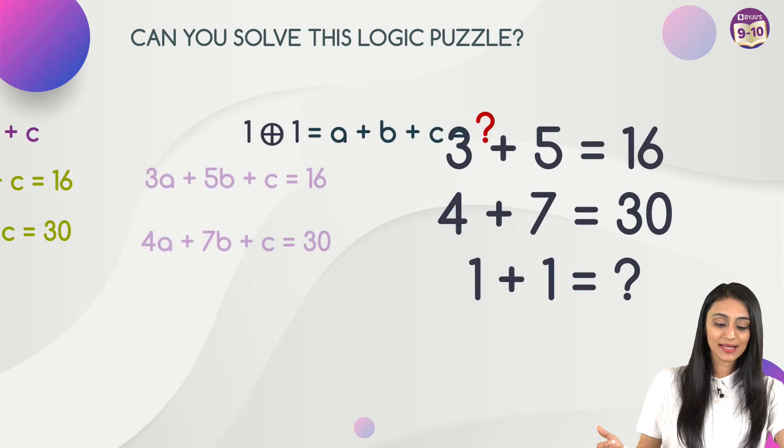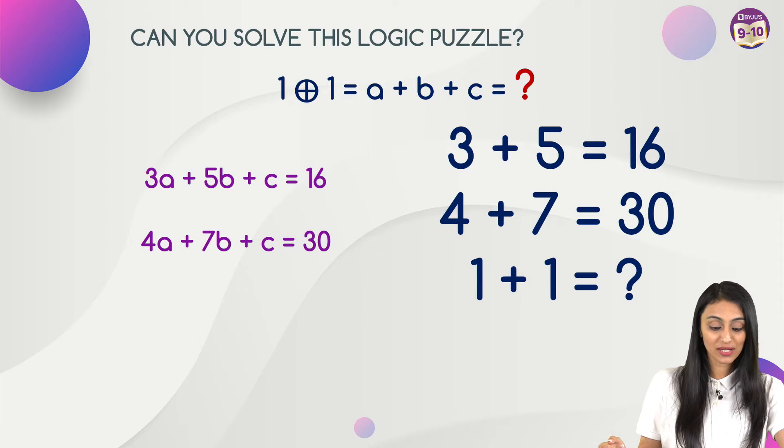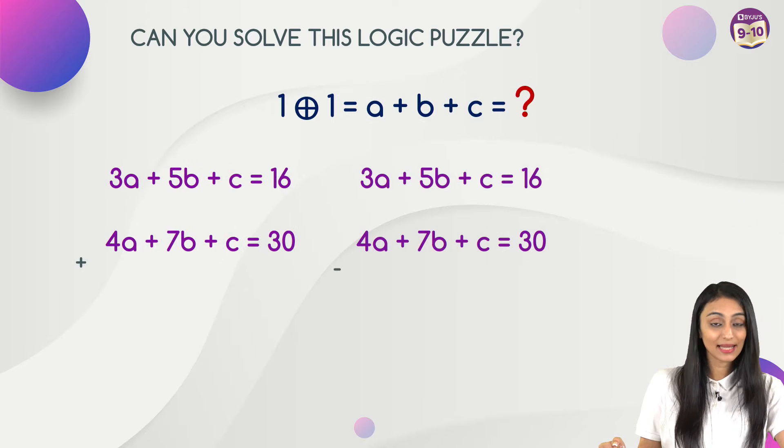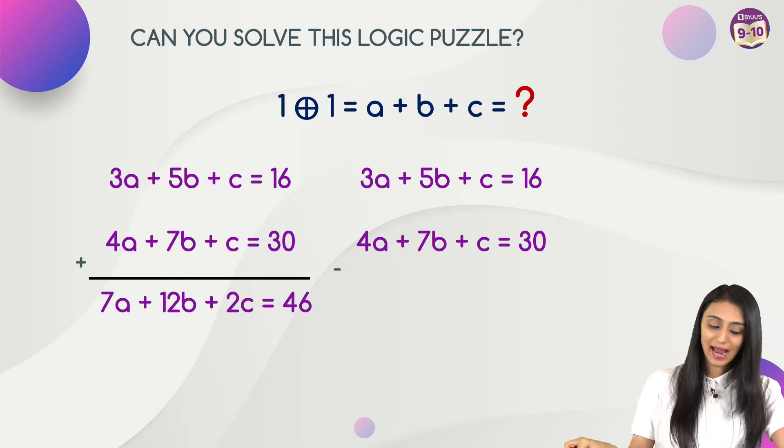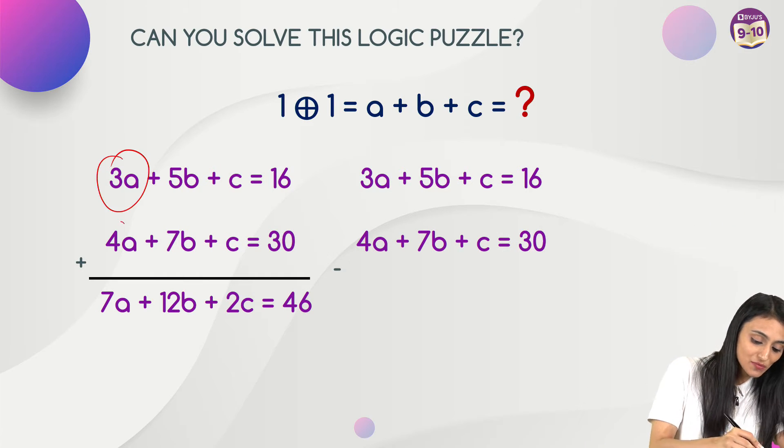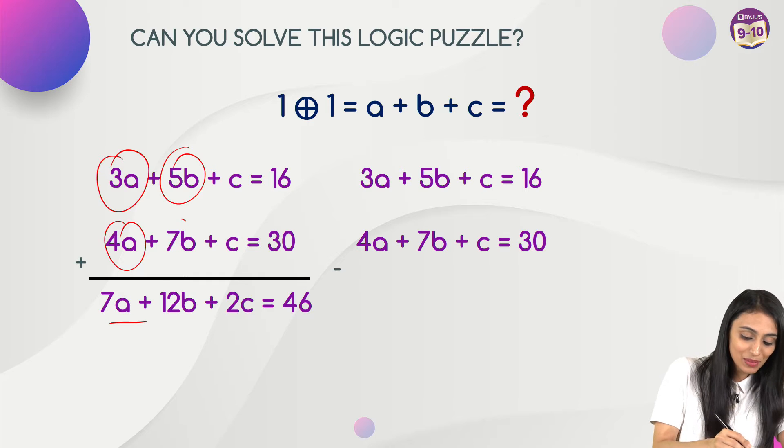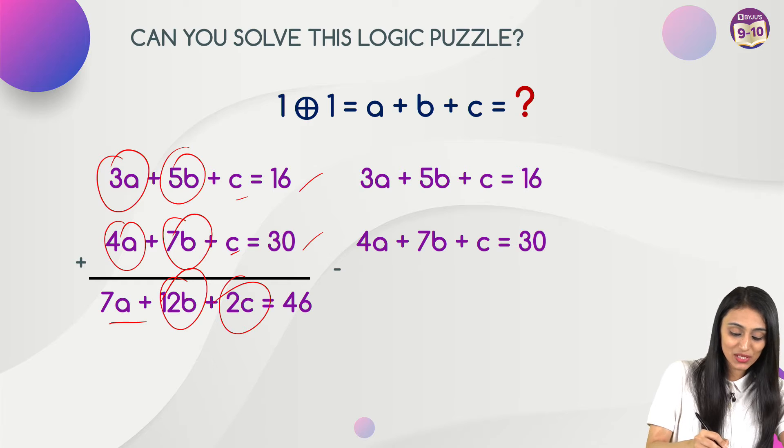So what I am going to do here is, I have got these two equations. First, I am going to add up these equations and subtract them as well. Once I add them up, what do I get? 3a plus 4a, that's 7a. 5b plus 7b, that's 12b. C and c will become 2c. 16 plus 30 is 46.